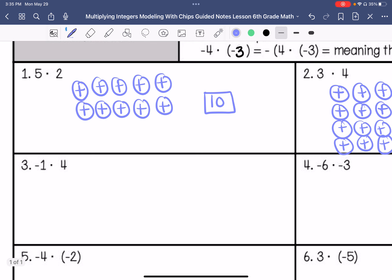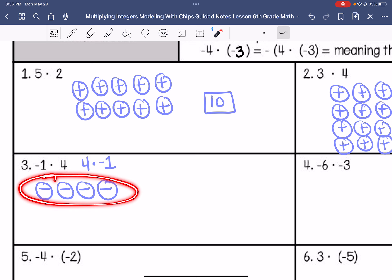Number 3. I'm going to rewrite this as 4 times negative 1. So I'm going to say this is 4 groups of negative 1. So 1, 2, 3, 4. So that ends up being negative 4.